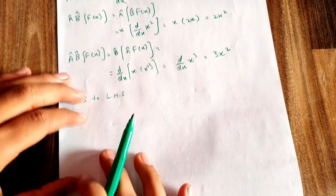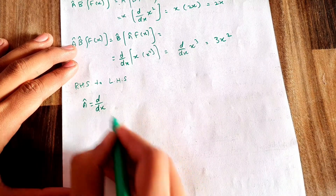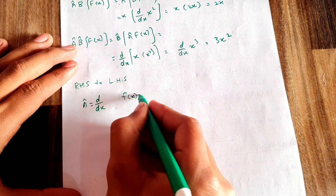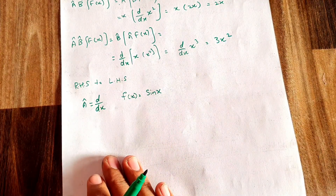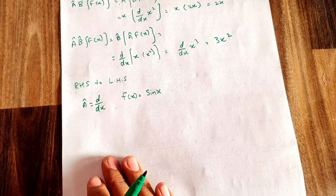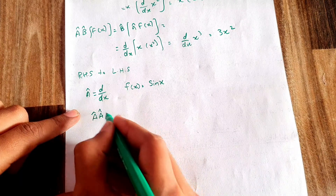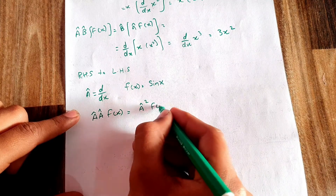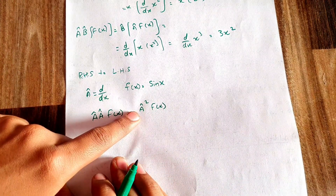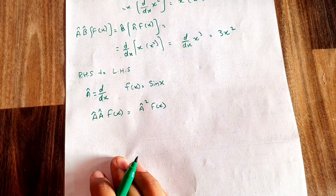Now, if we have an operator A = d/dx applied to the function f(x) = sin(x), and if an operator is applied multiple times on the same function, we can write it as A² f(x), meaning operator A is applied on the function two times.